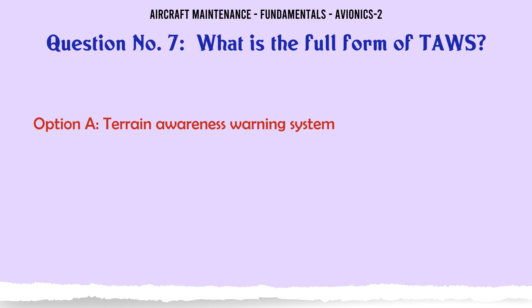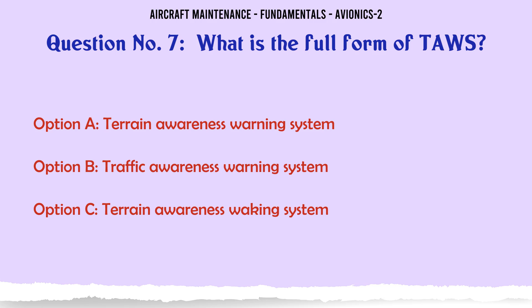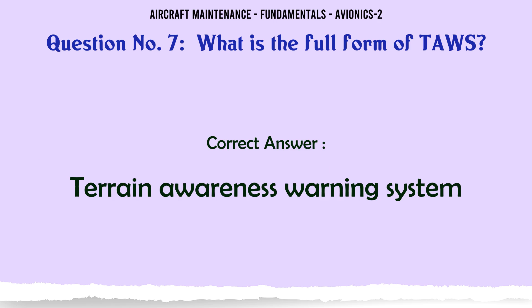What is the full form of TAWS? A. Terrain Awareness Warning System, B. Traffic Awareness Warning System, C. Terrain Awareness Waking System, D. Traffic Awareness Waking System. The correct answer is Terrain Awareness Warning System.